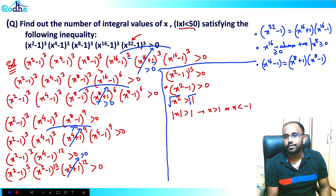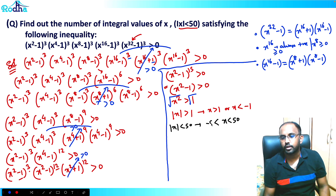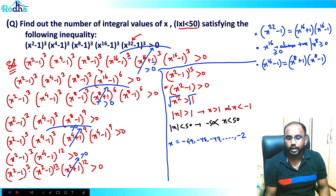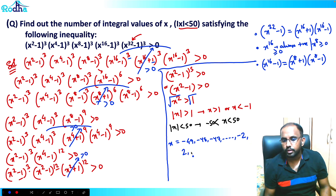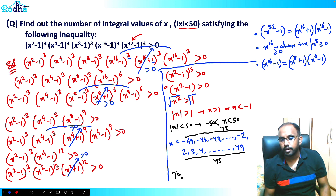The question also states that |x| < 50, meaning x is between -50 and 50. Combining both conditions, x can take values: -49, -48, ..., -2 (for x < -1) — that's 48 values — and 2, 3, 4, ..., 49 (for x > 1) — that's another 48 values. So the total is 96 values, which is the answer.